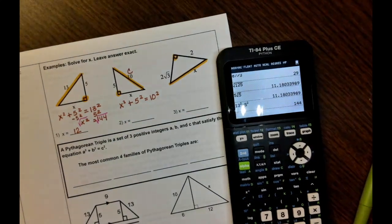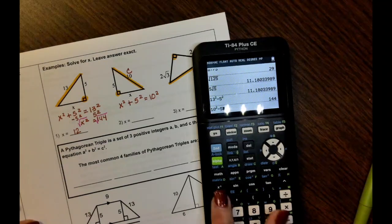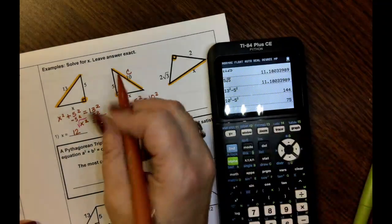Now if you do 10 squared minus 5 squared, you get that X squared is 75. Now, I need to point this out. It's not 10 minus 5 and then square it.